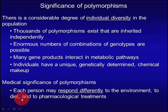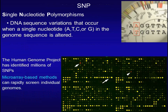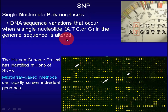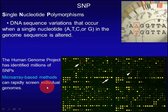Here we will focus on two types of polymorphism. The first is single nucleotide polymorphism, or SNP — it represents DNA sequence variations that occur when a single nucleotide in the genome sequence is altered. The Human Genome Project has identified millions of SNPs. Microarray-based methods can rapidly screen individual genomes, and we will describe this technique in a later chapter.